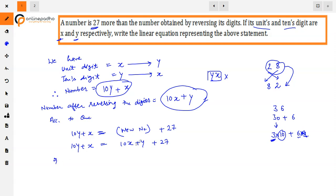Now in the linear equation, we represent it in standard form. We take all the terms: 10y plus x minus 10x minus y minus 27 equals 0. So 10y minus y gives 9y, and x minus 10x gives minus 9x minus 27 equals 0.